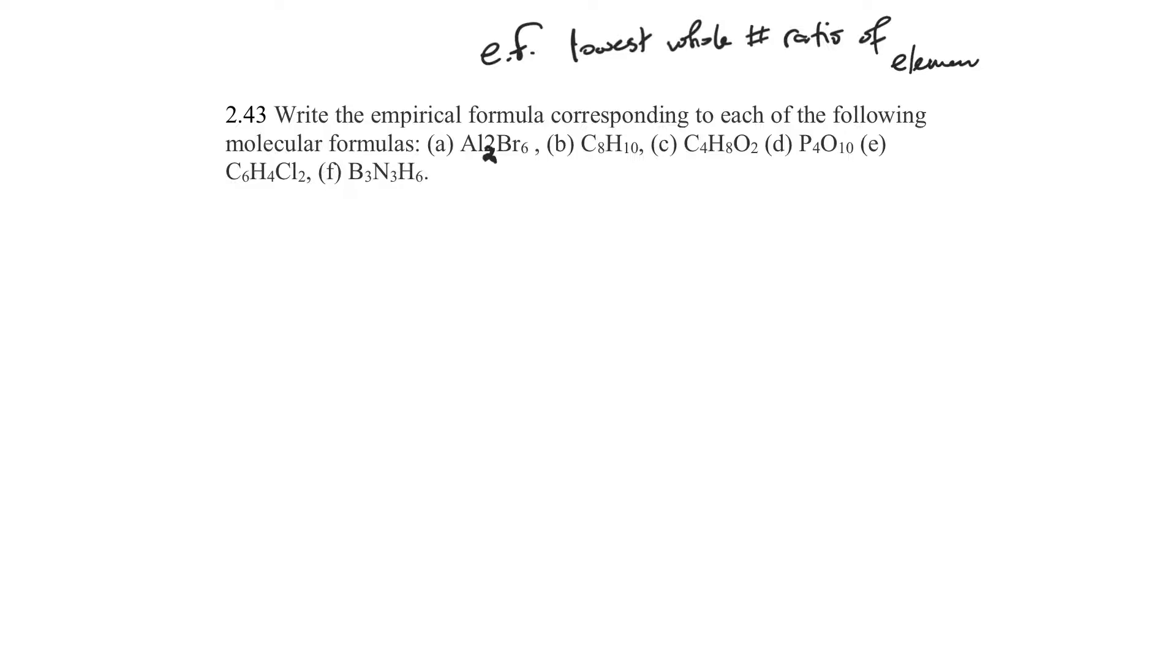So we're looking for a number that, the highest number that will go into two and six. Al2Br6, two will go into two, two will also go into six, so in the case of A, we're just going to reduce it down. So this is going to be AlBr3, that's the empirical formula.